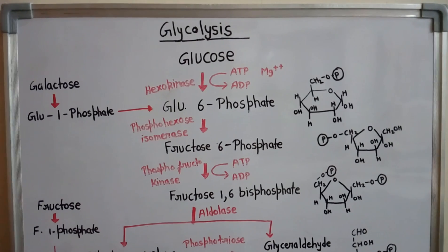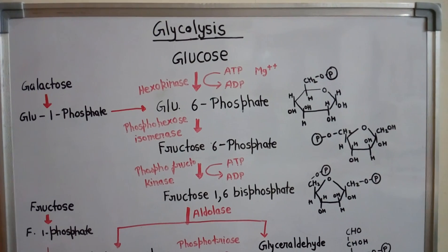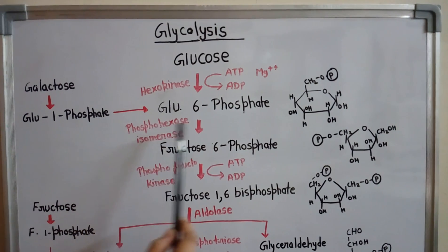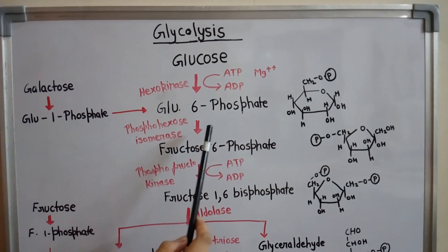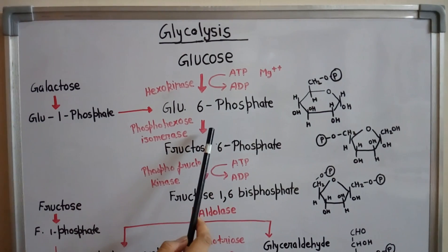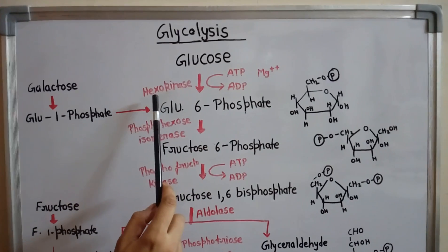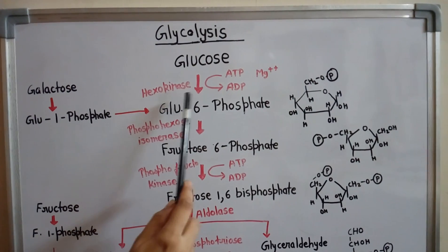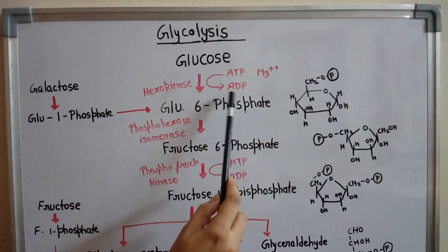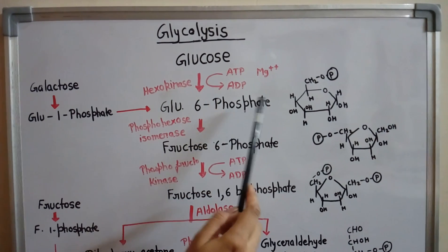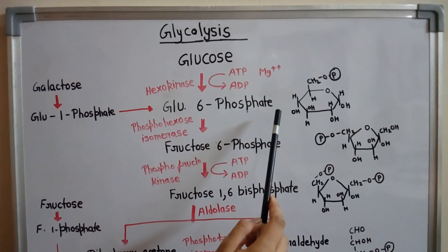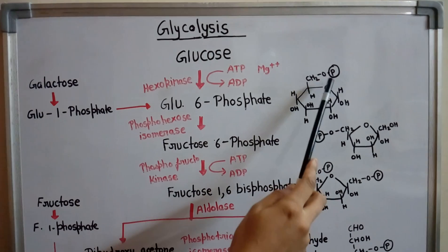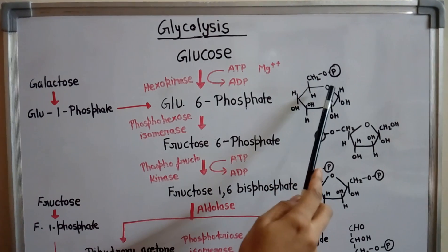Glycolysis is a 10-step process. In the first step, glucose is converted to glucose-6-phosphate. It is a phosphorylation process that takes place in the presence of the enzyme hexokinase, and one molecule of ATP is converted to ADP.